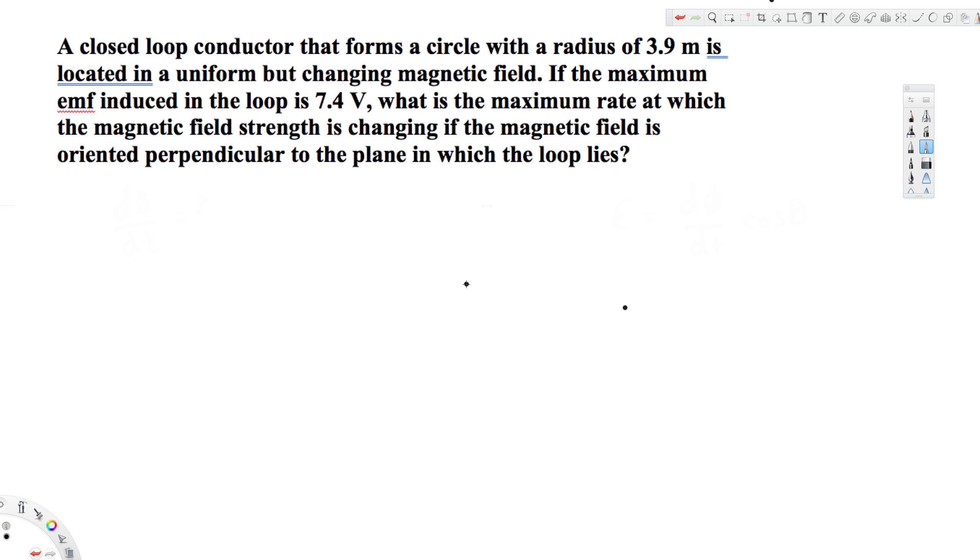The question is asking us to find the rate of change of the magnetic field, that is dB/dt. If you remember, we have the EMF equation, which is equivalent to dΦ/dt, magnetic flux over time. And this one is equal to dB/dt times A times cos theta.